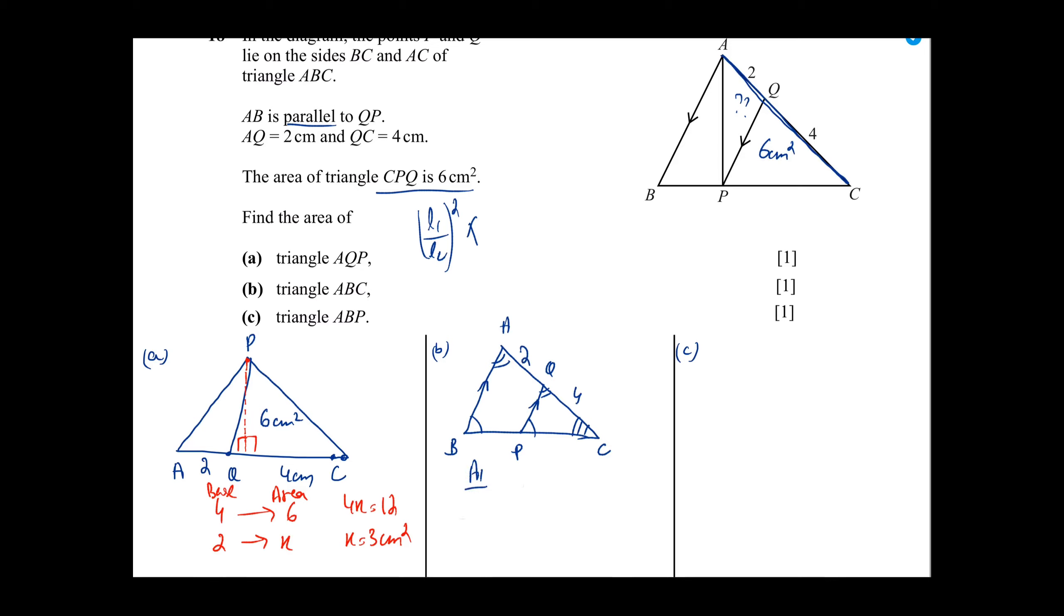Area of triangle ABC over area of triangle CPQ is equal to ABC length, I will use this whole length which is 6cm, so 6 over CPQ length which is 4, the whole thing squared. Now when you cross multiply and simplify it, your answer will come 13.5cm².